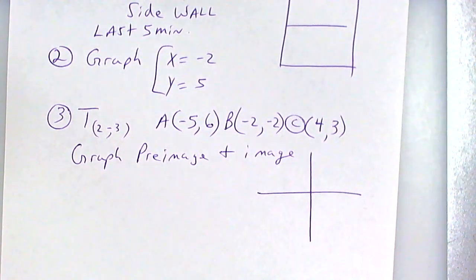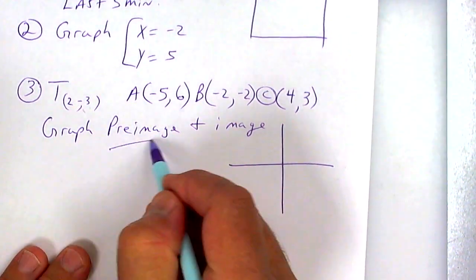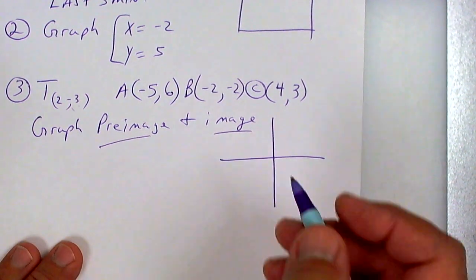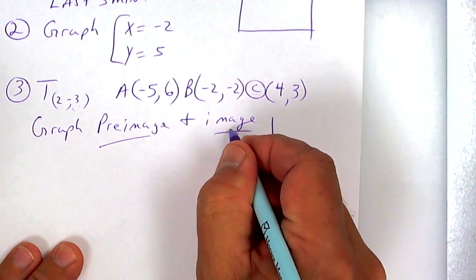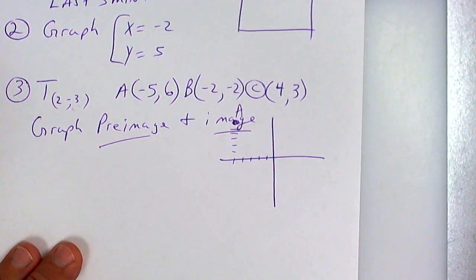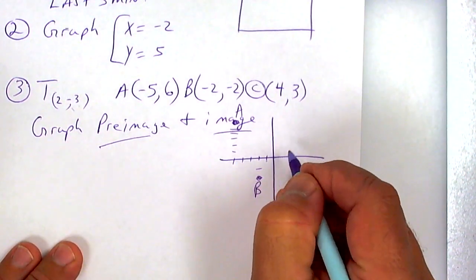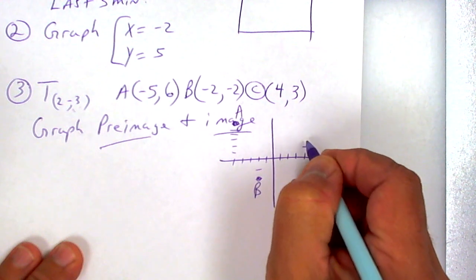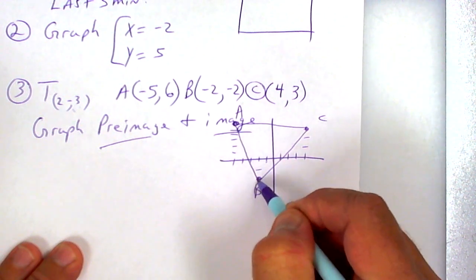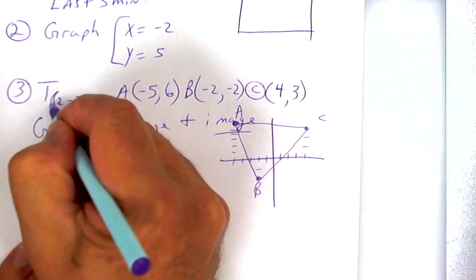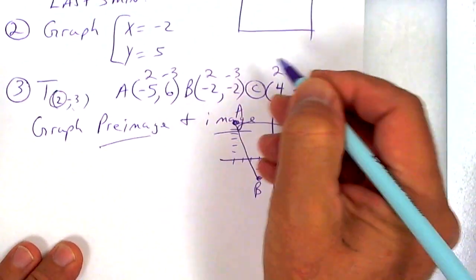Next I want you to graph these points and then translate them by adding negative three. Graph both the pre-image and the image. Point A is at negative five, negative six — that's point A. Negative two, negative two would be point B. Over four, up three would be point C. What we're doing is adding two to all the x-values and adding negative three to all the y-values — that's how you translate.